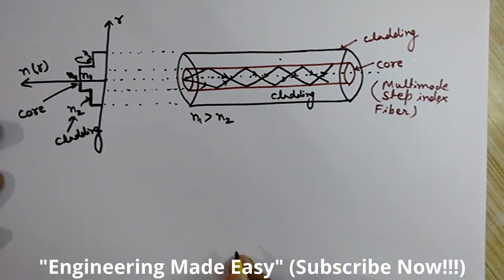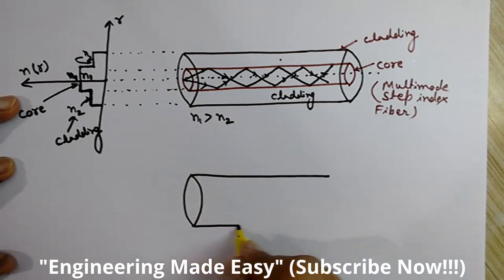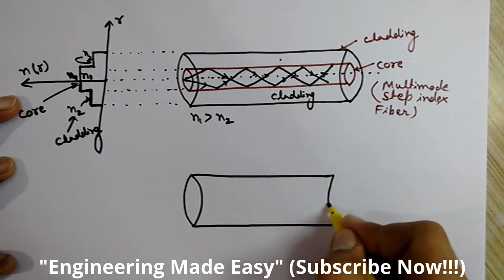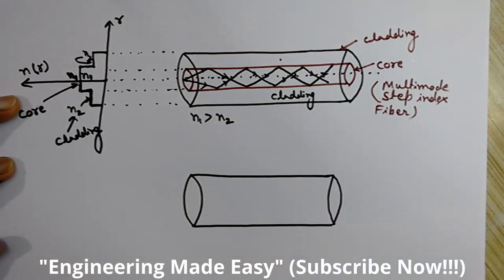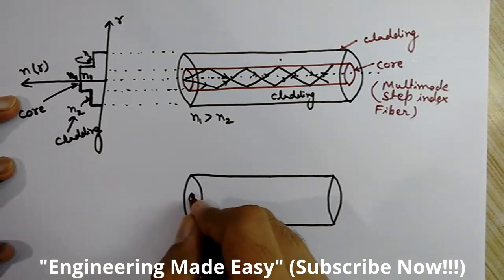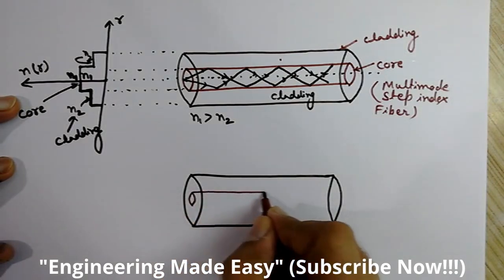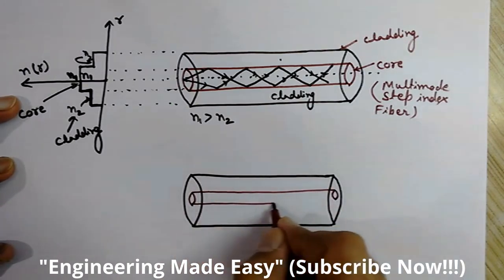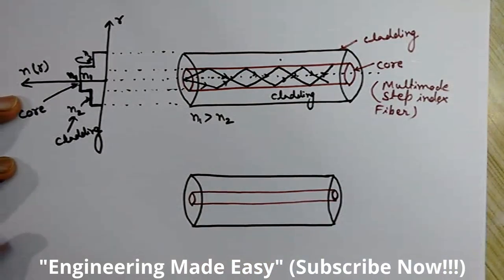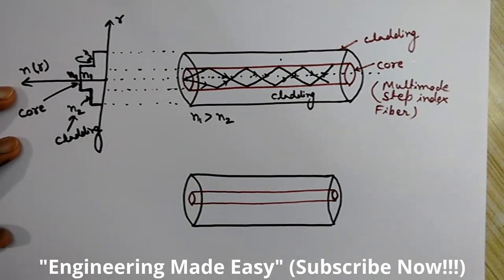Now let's draw the single mode step index fiber. The single mode step index fiber allows only one mode — a single ray of light — to propagate through it, because the diameter of the core is very small. It cannot allow more than one mode of light. This is the light propagating through it.